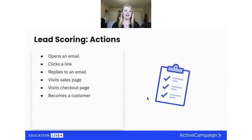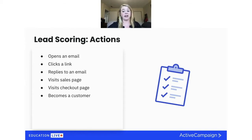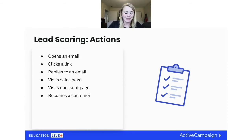There are cool actions, warm actions, and hot actions. Thinking of it that way makes it easier to start awarding points. Opening an email is a pretty low level of engagement — definitely something you want, but not a huge indication that someone is super hot and ready to buy. However, if someone clicks a link within that email, you know they read the email and were compelled to follow through on the call to action — that's a higher indication of interest.